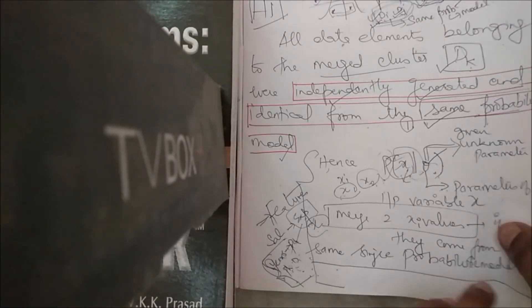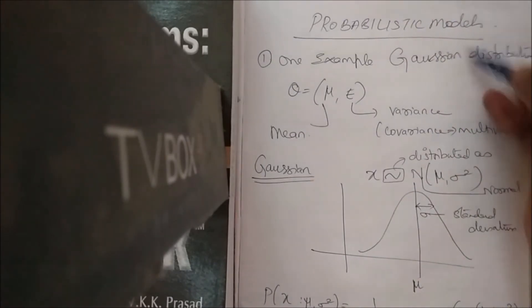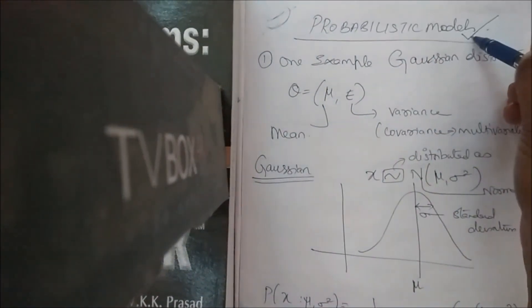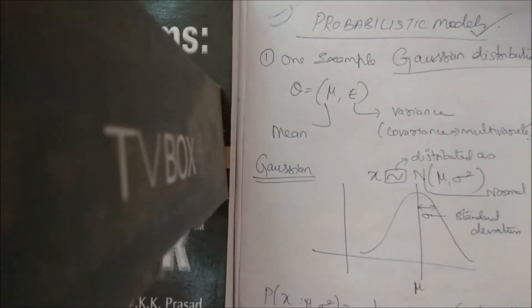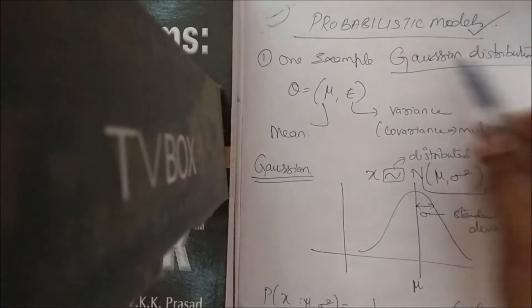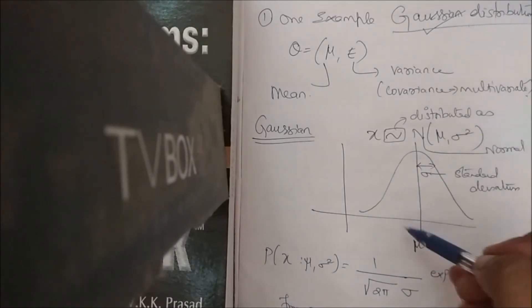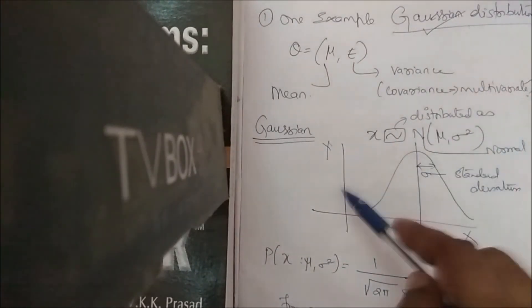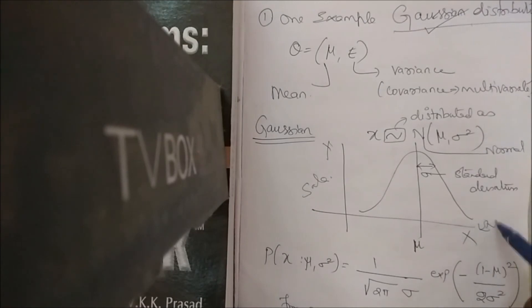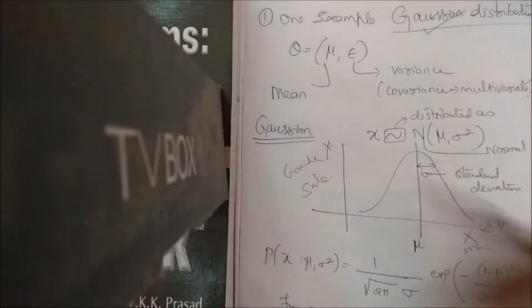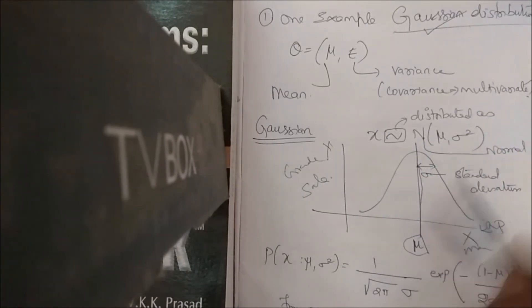To understand what it means to 'come from the same probabilistic model,' we look at the Gaussian distribution. The Gaussian distribution looks like a bell curve. The x and y axes vary by application — for example, predicting salary given experience, or finding a student's grade given marks. The peak of the curve is the mean μ, and the width from the mean is the standard deviation.